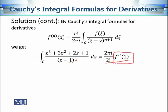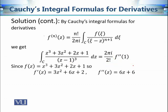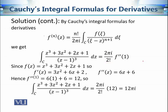The function is f(z) = z³ + 3z² + 2z + 1. The first derivative is 3z² + 6z + 2, and the second derivative is 6z + 6. Evaluating at z = 1 gives f''(1) = 12. Substituting back, the contour integral equals 2πi/2! × 12. Since 2! = 2, the 2s cancel and we get 12πi. In this very simple way we calculate the contour integral using Cauchy's integral formula for derivatives.